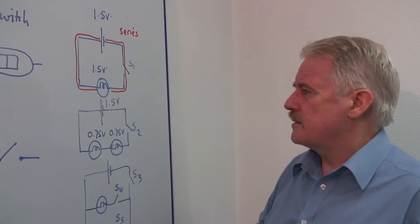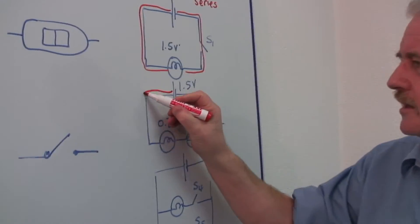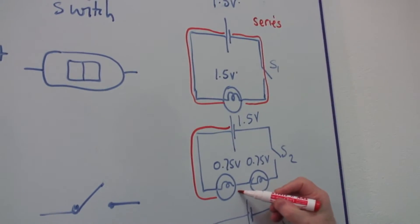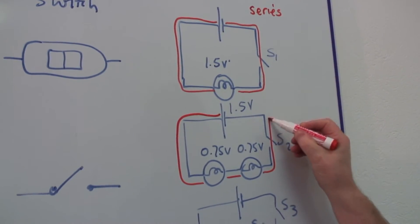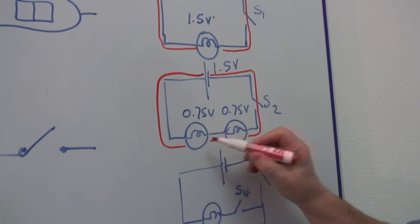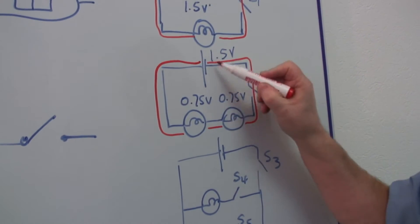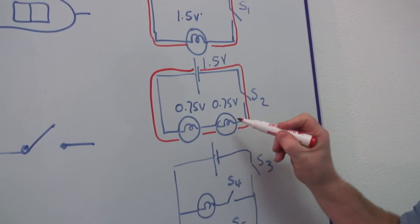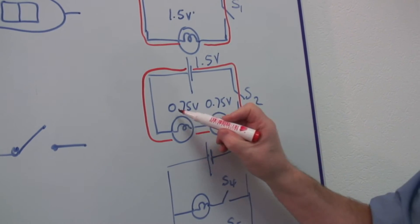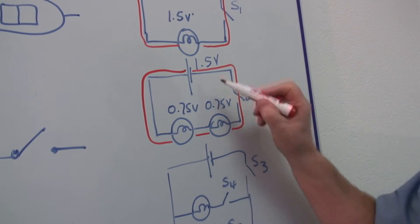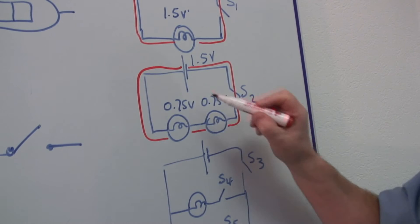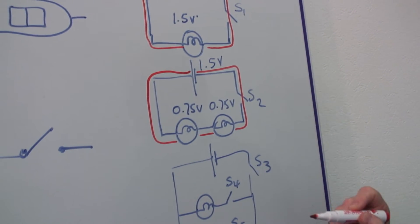If I take exactly the same circuit, still a series circuit, but this time I insert two bulbs in series, in this way. In fact, the voltage from the cell will be shared between the two bulbs, and I'll get 0.75 volts on each if I've got 1.5 volts from the cell.